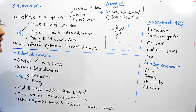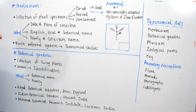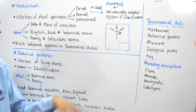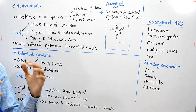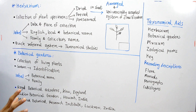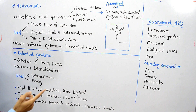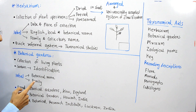Let us move to another taxonomical aid — botanical gardens. As mentioned earlier, botanical gardens have a collection of living plants. These plants are grown for identification purposes. You can easily identify a whole living plant and study its characters. There is a label on each plant so that we can easily know its name; the label mentions the botanical name and family of the plant.